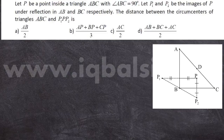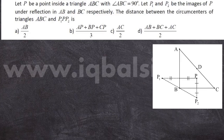Let P be a point inside triangle ABC with angle ABC equal to 90 degrees. Let P1 and P2 be the images of P under reflection in AB and BC respectively. The distance between the circumcenters of triangles ABC and P1P2 is — the answer should be in terms of AB, AP, BP, CP, BC, etc.